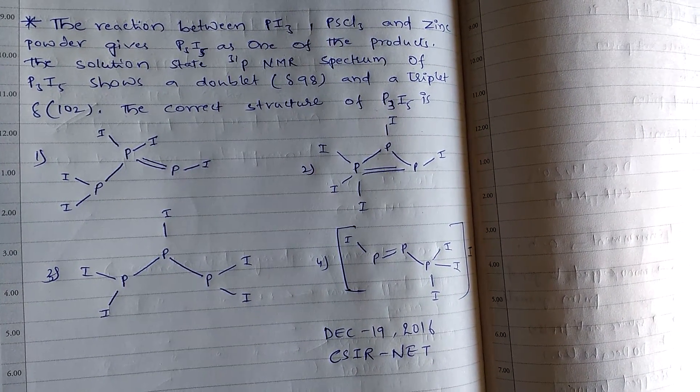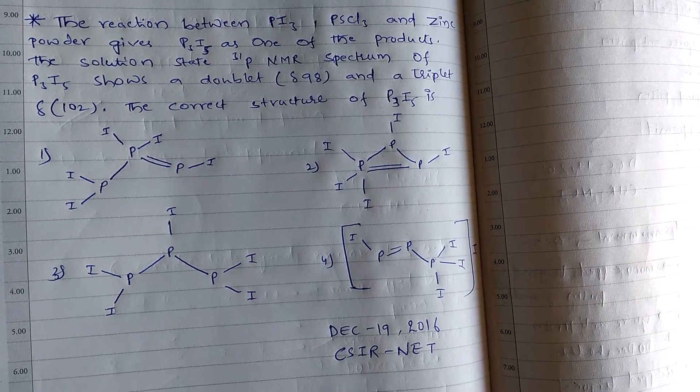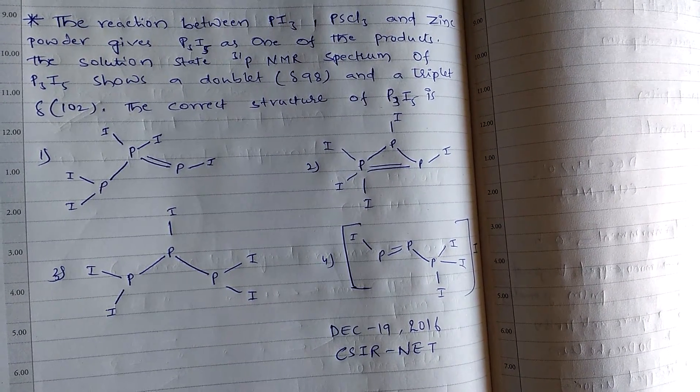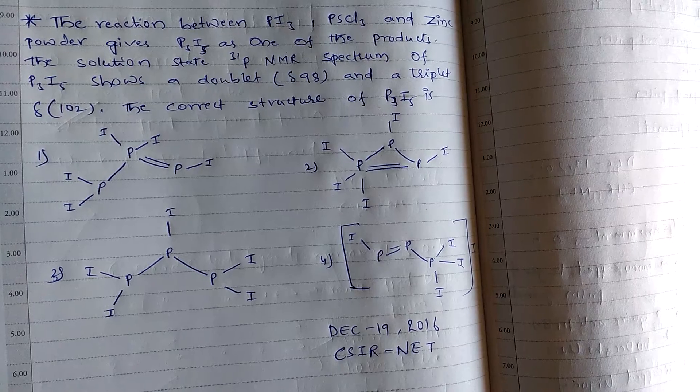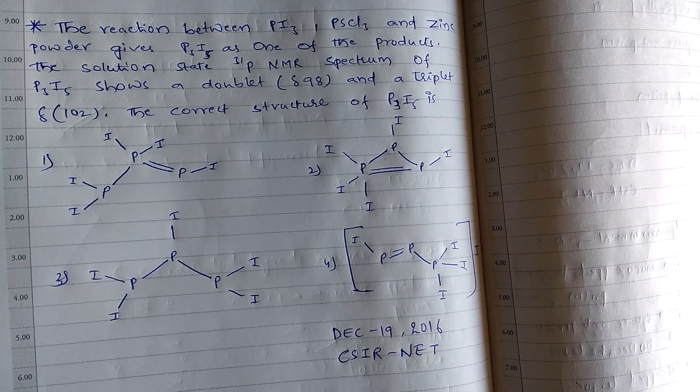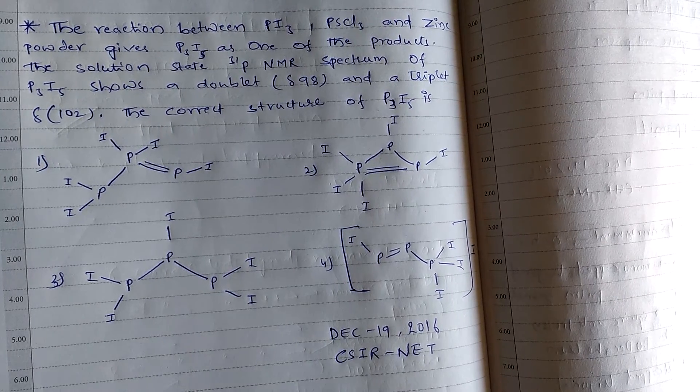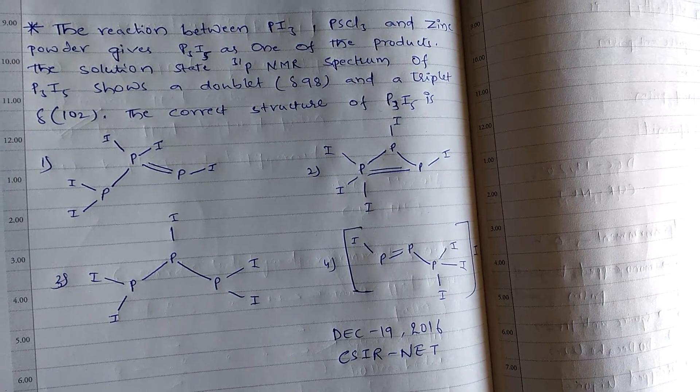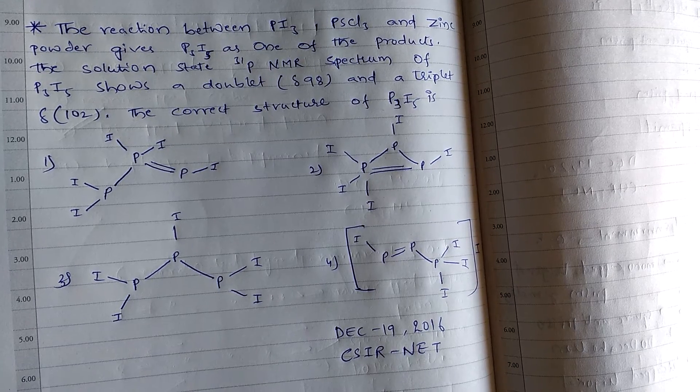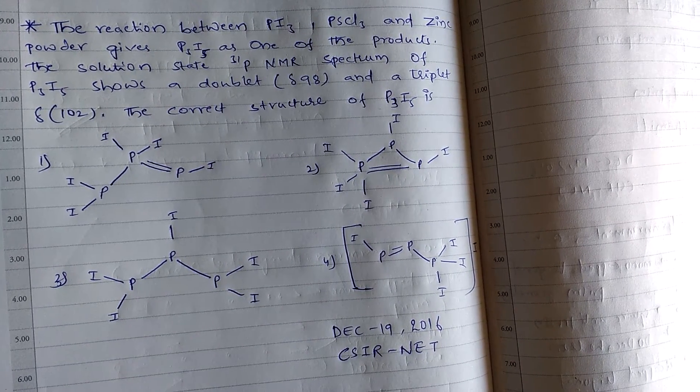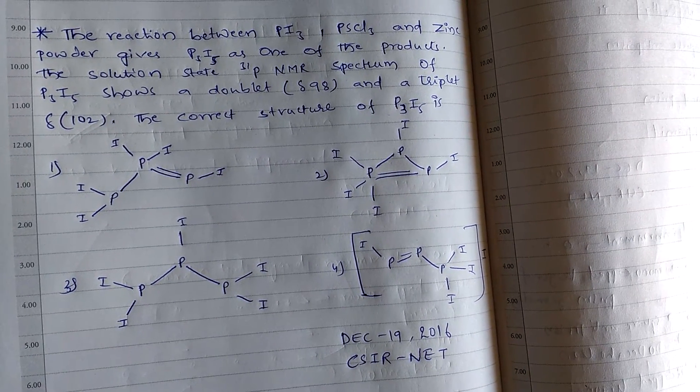The question is, the reaction between PI3 and PSCl3 and zinc powder gives P3I5 as one of the products. The solution state P31 NMR spectrum of P3I5 shows a doublet delta-98 and a triplet delta-102. The correct structure of P3I5 is?